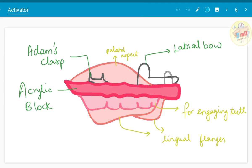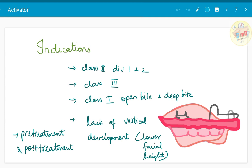These are the basic parts of an activator. It contains an acrylic component and a wire component.